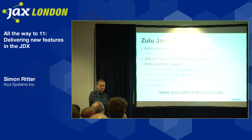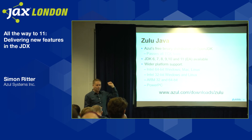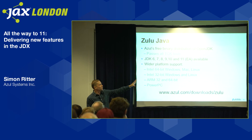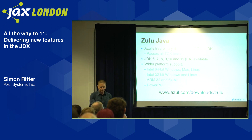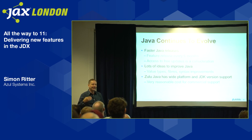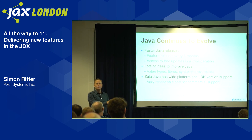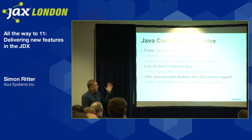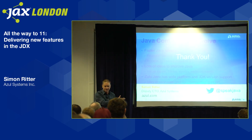Just briefly: Zulu Java is our distribution of OpenJDK plus all TCK tests. We support versions 6, 7, 8, 9, 10, and 11 with wider platform support — 64-bit and 32-bit versions of Windows and Linux, ARM and PowerPC for embedded. You can download it for free at zulu.com. To summarize: Java continues to evolve with faster six-month releases; you need to think about how you get access to updates going forward; and there are lots of ideas to improve Java through Project Loom, Valhalla, Amber, and others — so it's not standing still as a language.